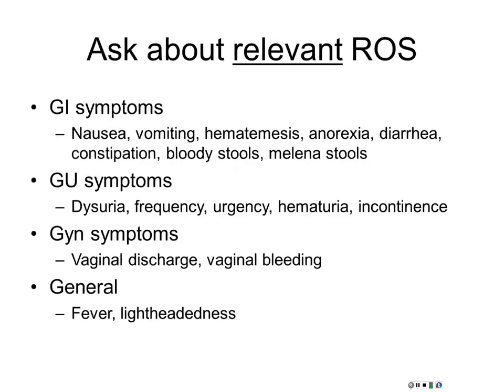Relevant review of systems — GI and GU symptoms together. I saw a guy Monday who said he had horrible left-sided pain and thought his diverticulitis was coming back. I asked how long it lasted — two to three hours, went right away. I asked about other symptoms, then asked if he had blood in his urine. He said yes. He had a kidney stone. I sent him to a colorectal surgeon for a kidney stone. A thoughtful GU review of systems is very helpful.